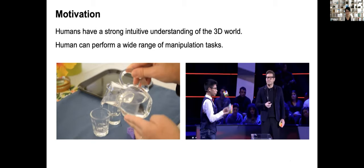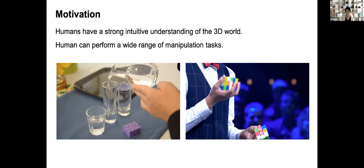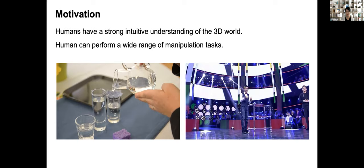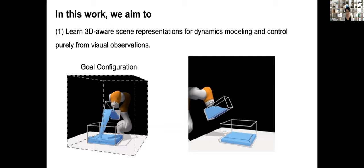Humans have a strong intuitive understanding of 3D environments purely from visual observations. The intuitive physics engine in our brain enables us to perform a wide range of manipulation tasks as shown in these videos. However, these manipulation tasks are too challenging to be achieved for existing robots.